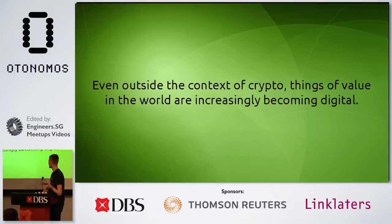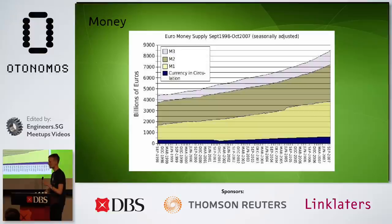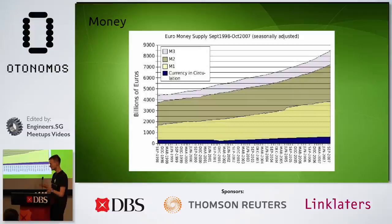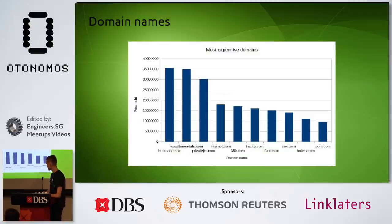Even outside the context of crypto, things of value in the world are becoming increasingly digital. Here's a chart of the euro money supply from 1998 to 2007, broken into categories: physical currency, M1, M2, M3 — different categories of bank deposits, almost all of which are stored virtually. People sometimes talk about bitcoin as if it's the first digital currency — well, the euro is already 90 percent digital. Even domain names: the ownership of privatejet.com literally costs more money than a private jet.